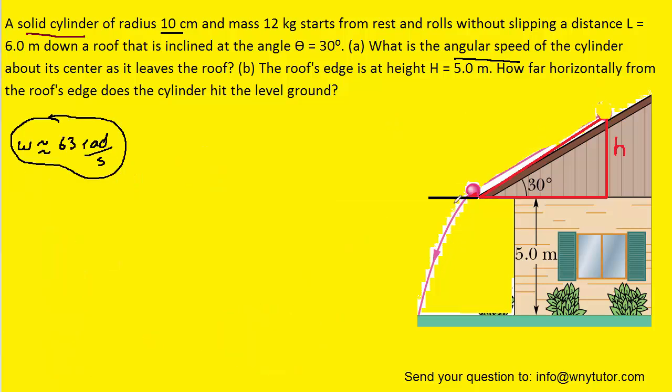Part B becomes a projectile motion question. What we have is an object being launched off the surface of the ramp with an initial velocity. We're going to figure that out in just a moment. And it's being launched at an angle of 30 degrees relative to the horizontal. So we can mark that angle as 30 degrees.